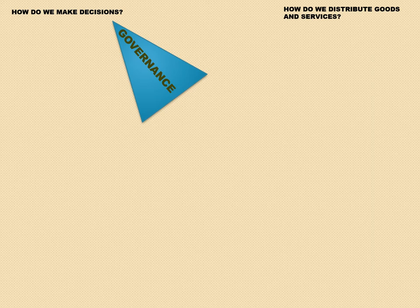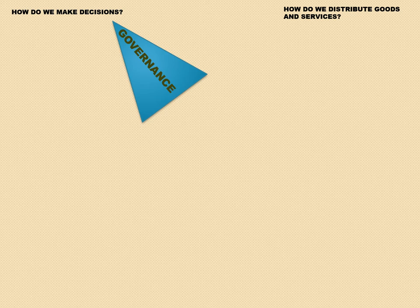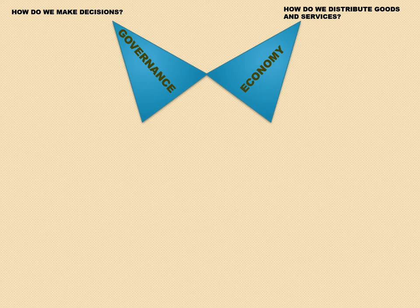The next question is: how do we distribute goods and services? We need food, shelter, clothing, protection from the elements, roads, transportation, manufacturing, and so forth. As we become a more complex society, we have all kinds of goods and services that need to be distributed. We call this economy — basically the method by which we distribute goods and services.